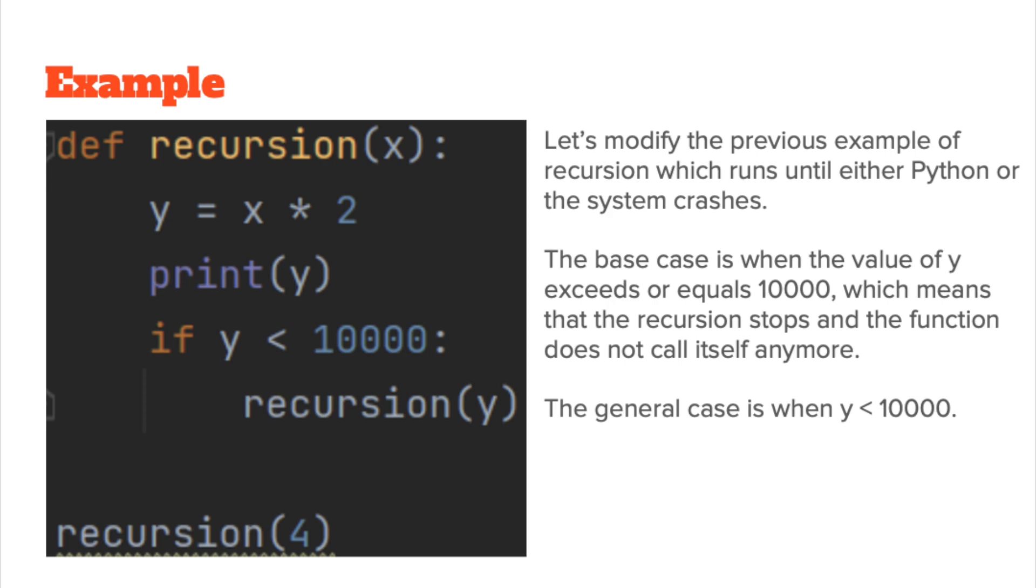Okay, let's modify our previous example to ensure that it doesn't crash. So we need to put in a base case, and the base case we're going to put in is when the value of y exceeds or equals 10,000 the recursion will stop. So in this particular case when y is less than 10,000, keep calling the function. So recursion y is called if it's less than 10,000; the moment y is equal to 10,000 the recursion will stop. So when you do recursion 4, it's going to keep doubling all the way up to 10,000 and then if it reaches 10,000 or exceeds 10,000 it'll stop.